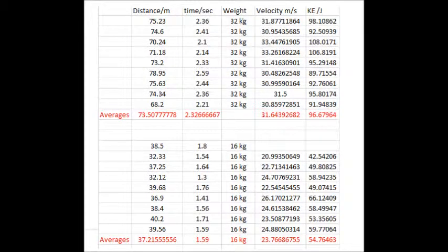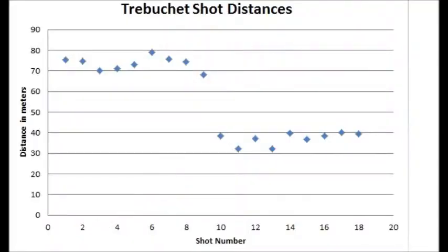We collected the data and performed calculations on a series of test shots. We did 10 shots with 32 kilograms and 10 shots with 16 kilograms as the counterweight, calculated our velocities and our kinetic energy levels per shot. We then created a chart plotting the distances for each shot on a side-by-side comparison so we could see the differences.